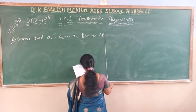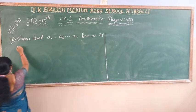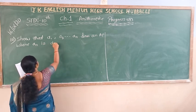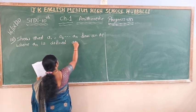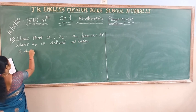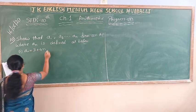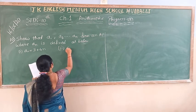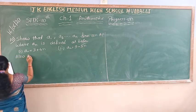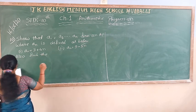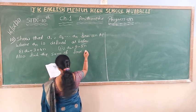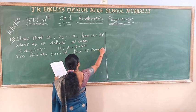The 10th question has two sub-questions. The nth term is defined as: first one, an is equal to 3 plus 4n, and the second one is an is equal to 9 minus 5n. Find the sum of the first 15 terms in each case.